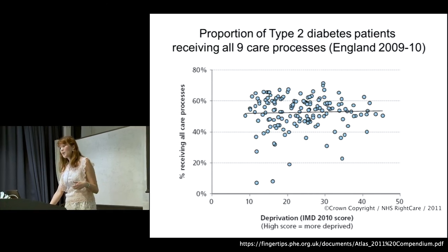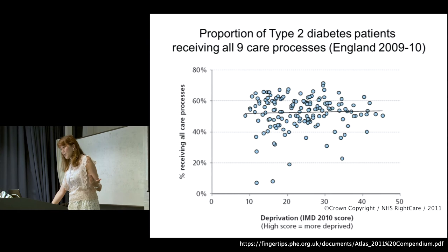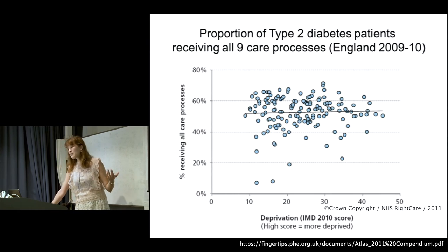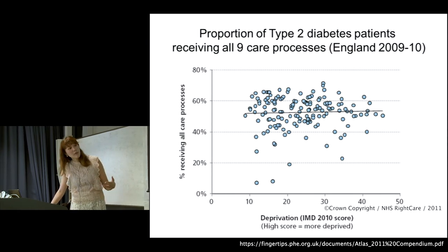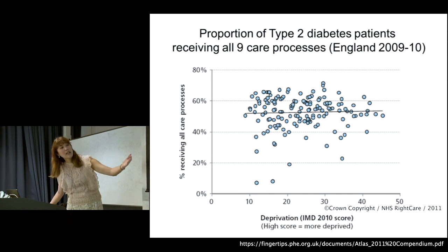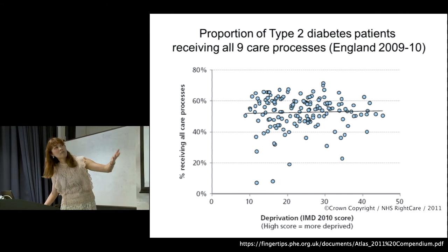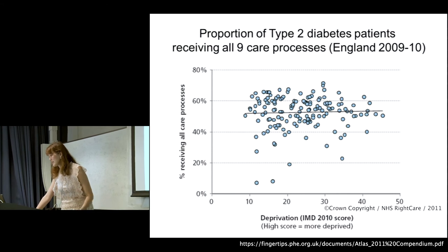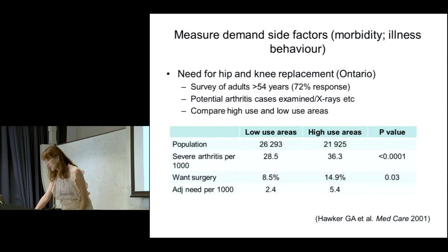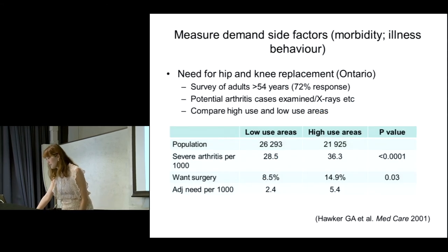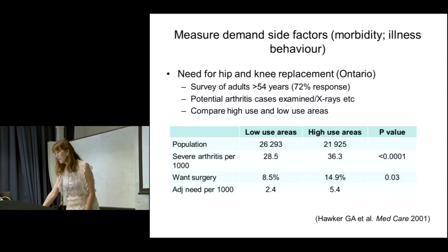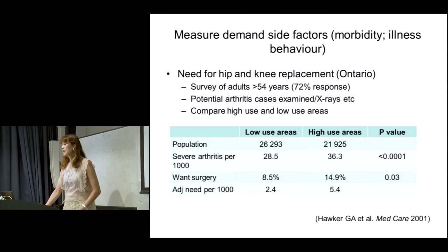There's also another measure showing type 2 diabetes and different care processes by deprivation. We can see that the trend is broadly in line with what we'd expect.